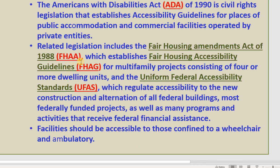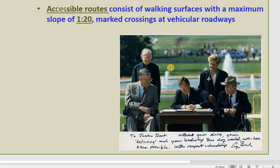If you see FHAA, FHAG, UFAS, or ADA — these are all fill-in-the-blank questions I will ask on the second quiz. And if you see something like the slope route for a walking surface, the maximum is 1:20. That means for every 20 feet of length, you rise only one unit.